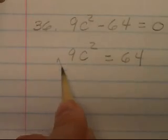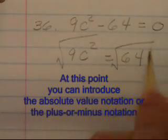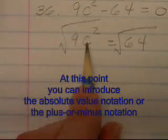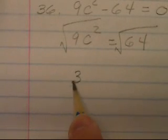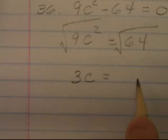And then we want to take the square root of both sides. The square root of 9c squared, this will give us 3c is equal to plus or minus eight.